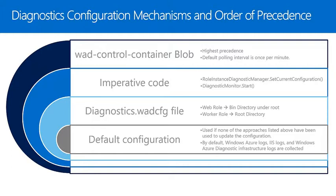Another advantage is that changes to diagnostics configuration do not require the code to be rebuilt. A control configuration blob will be created for each role instance whenever a role without a blob is started. The WAD control container blob has the highest precedence for controlling behavior, and any changes to the blob will take effect the next time the instance polls for changes. The default polling interval is once per minute. The setCurrentConfiguration method updates the WAD control container blob directly and will result in a new configuration taking effect on the next polling interval. This is the preferred mechanism for setting configuration programmatically.